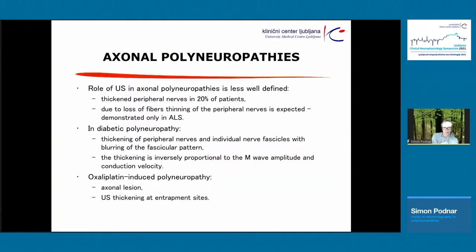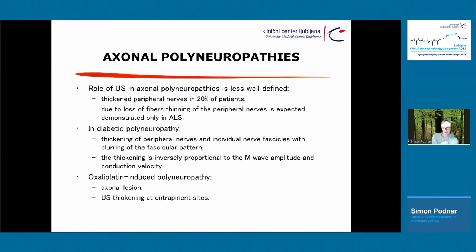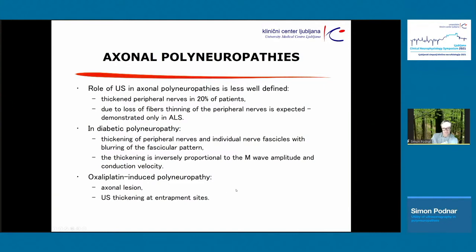Regarding axonal neuropathies — most of them will not have thickened nerves, but there can be surprises. It is particularly important that sometimes you see a patient with a low amplitude response and think it is purely axonal, then you do ultrasound and see a huge nerve, which should prompt you to consider a hereditary condition or CIDP. You also find changes in diabetic polyneuropathy, and in some toxic neuropathies where electrophysiology shows axonal lesion but ultrasound reveals thickening of the nerve at treatment sites.